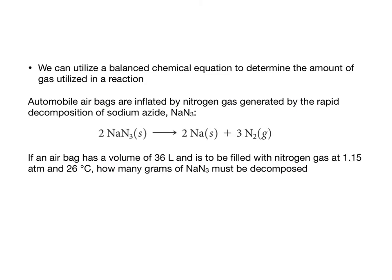We can also combine PV equals NRT with a balanced chemical equation, similar to stoichiometry from chapters 3 and 4. For example: airbags are inflated by nitrogen gas from the rapid decomposition of sodium azide (NaN3). The equation is: 2 NaN3(s) → 2 Na(s) + 3 N2(g). If an airbag has a volume of 36 liters and is filled with nitrogen at 1.15 atmospheres and 26 degrees Celsius, how many grams of sodium azide must be decomposed?